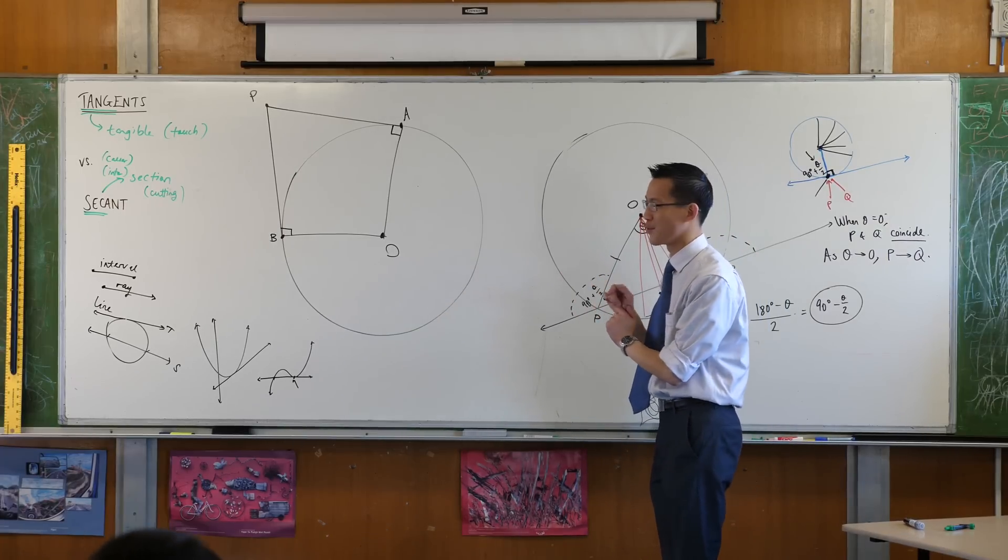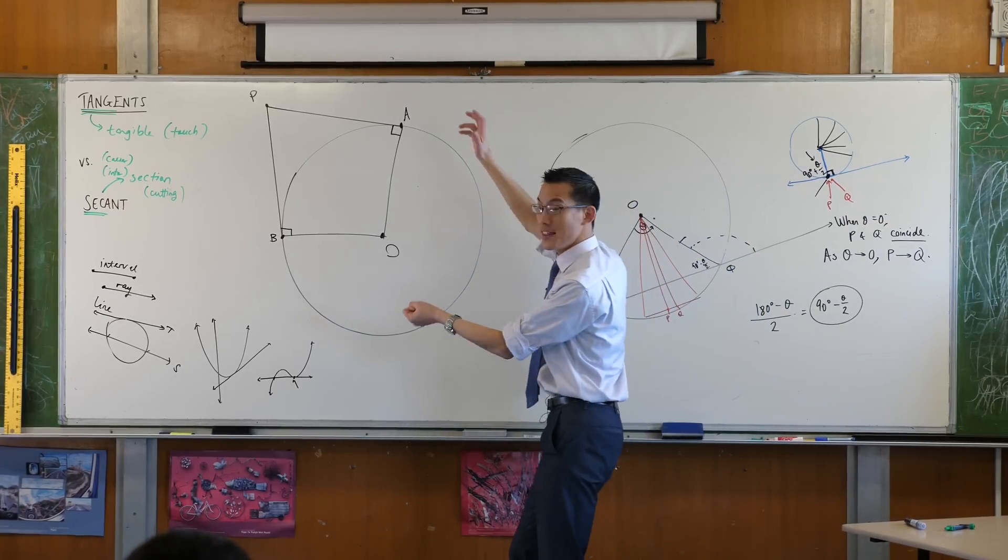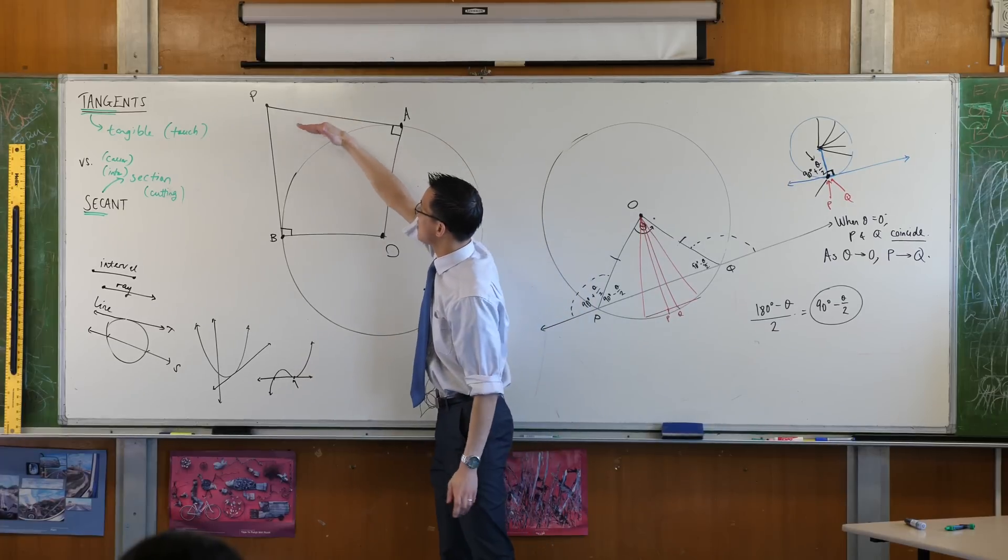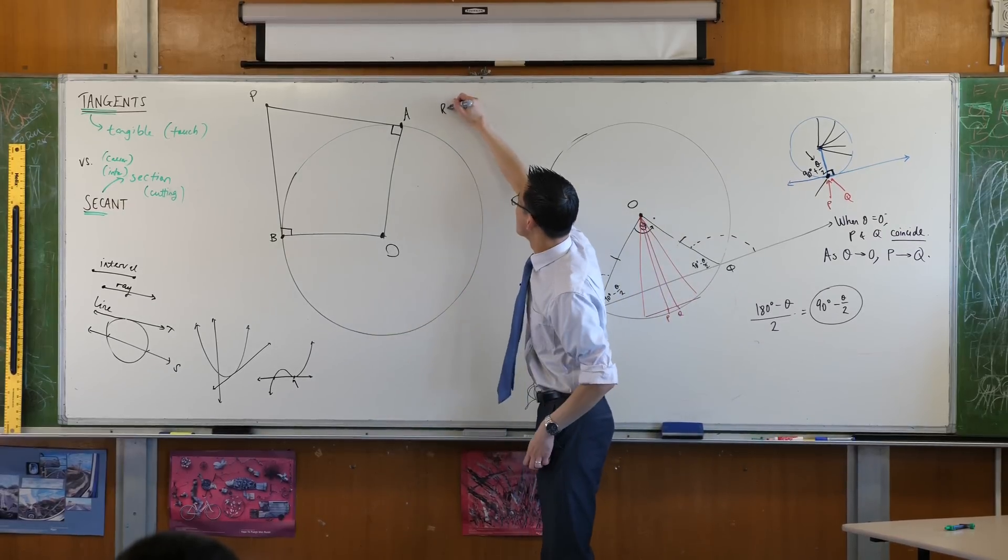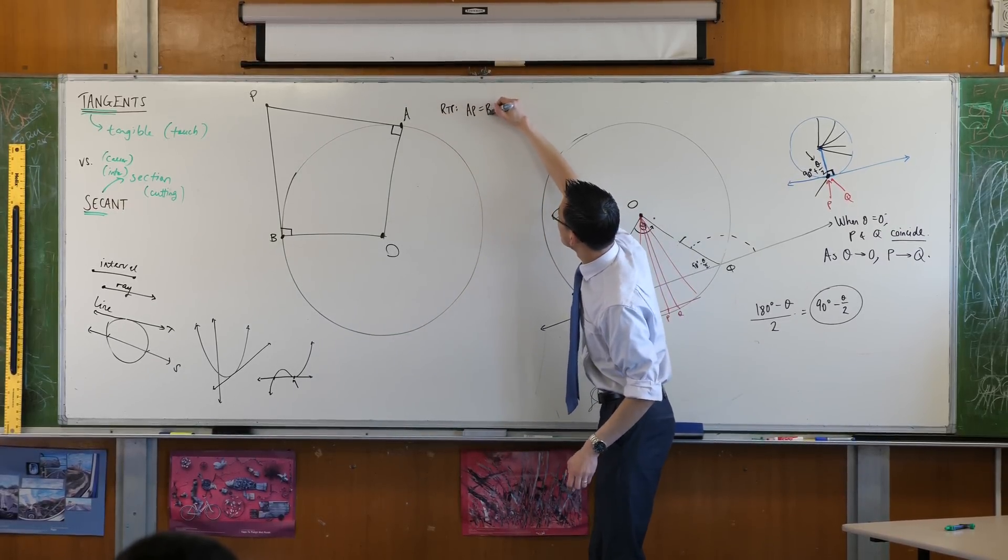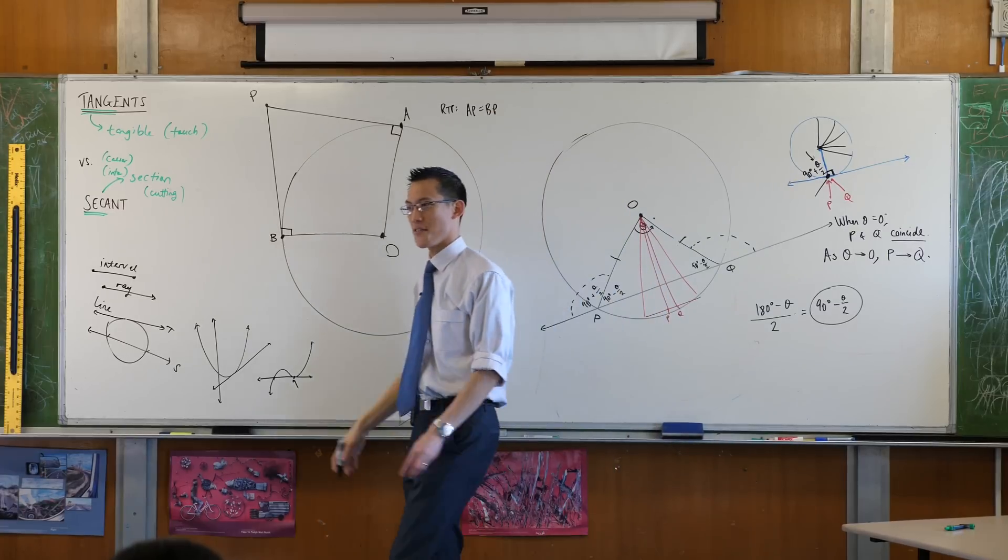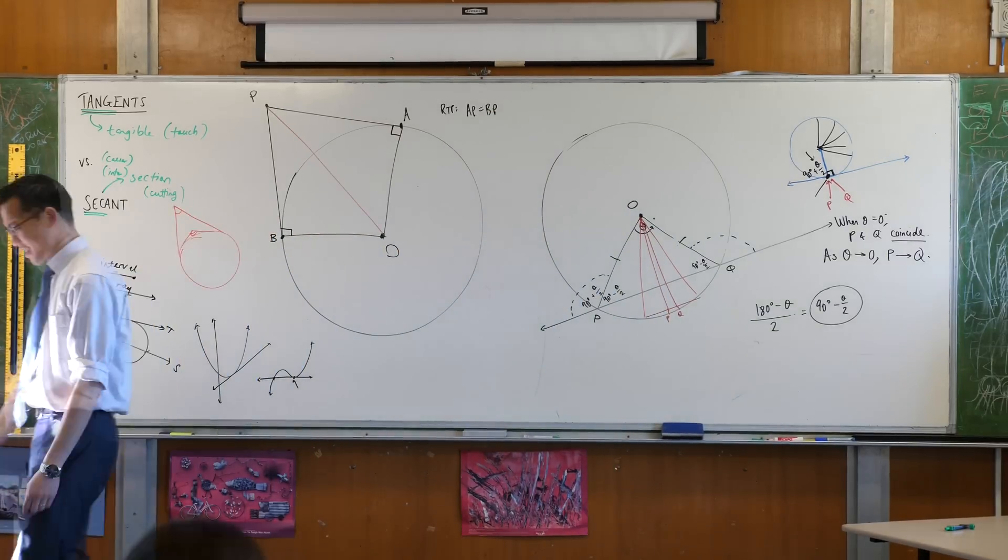I've given you some clues, given you quite a few, actually. How can you use this information to show that these two lengths are AP? What we're required to prove is that AP is equal to BP. Have a shot. If you've got something, call me over. Proved.